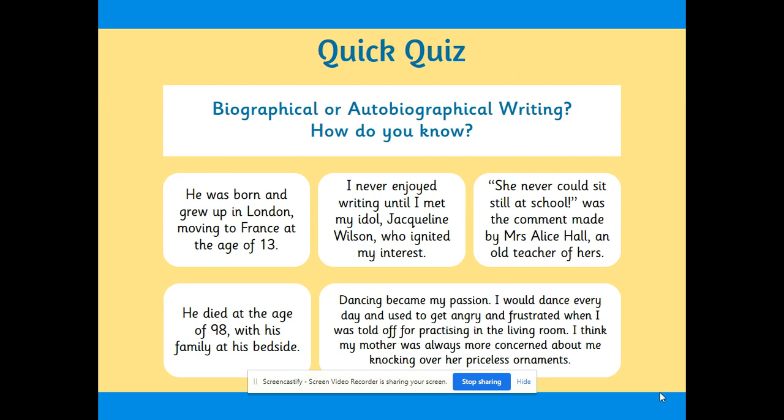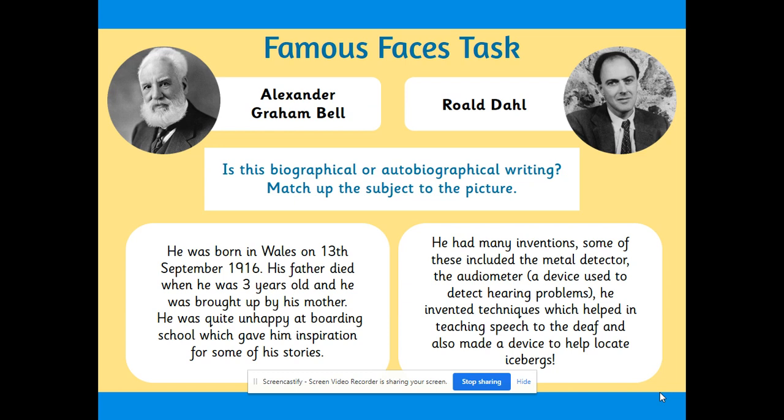So how do you know? 'He was born and grew up in London, moving to France at the age of 13' — do you think that's an autobiography or a biography? That is a biography because it's written in the third person. 'I never enjoyed fighting until I met my idol Jacqueline Wilson, who ignited my interest' — what do you think about that one? Good — autobiography. 'She never could sit still at school' was a comment made by Mrs Alice Hall, one of her old teachers — that is also a biography. 'He died at the age of 98 with his family at his bedside' — biography. 'Dancing became my passion, I would dance every day and used to get angry and frustrated when I was told off for practicing in the living room; I think my mother was always more concerned about me knocking over her priceless ornaments' — autobiography.